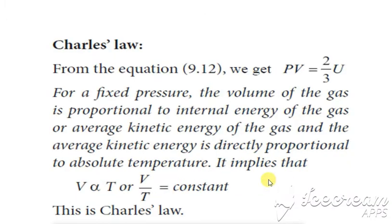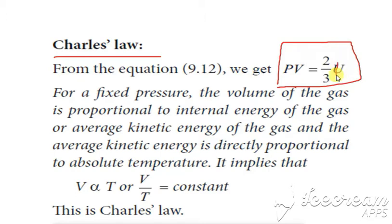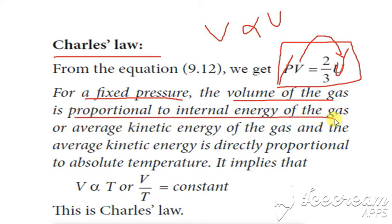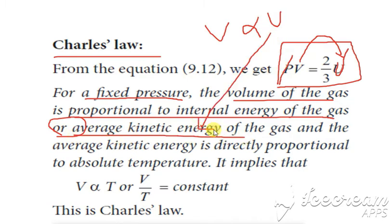Next, we are going to see Charles' law. For this, we take the equation PV = 2/3 × U. U is the internal energy. Here, pressure is being fixed. For fixed pressure, the volume of the gas — how is it related to the internal energy? It is directly proportional to the internal energy. So the volume of the gas is directly proportional to the internal energy, or in other words, the average kinetic energy.